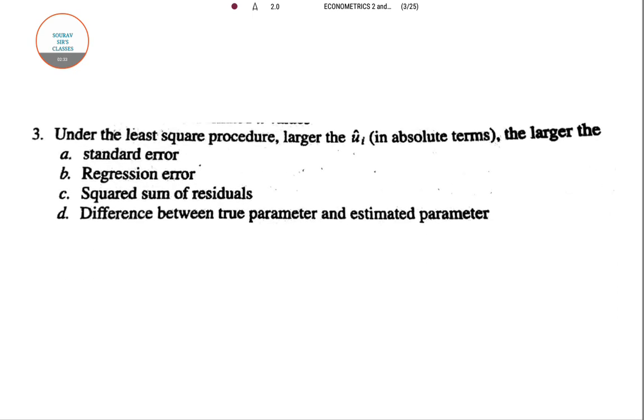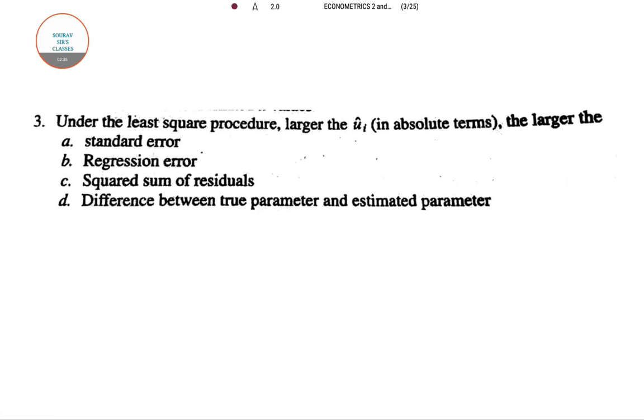Going for the next question. In this question they have given under the least square procedure, least square estimator we know that why we take a square of the terms because some terms may be positive some may be negative and sum may be 0. So which may give you the illusion that there is no fluctuation. That's why we take the square of every term without taking the modulus value.